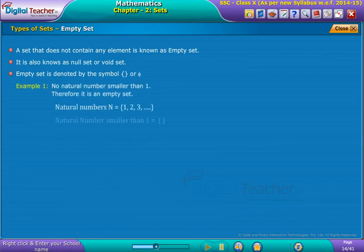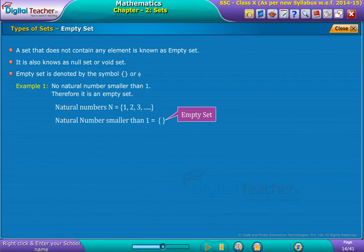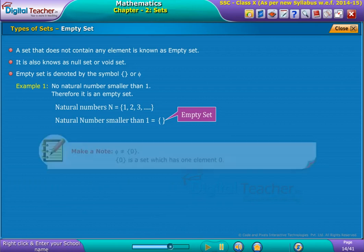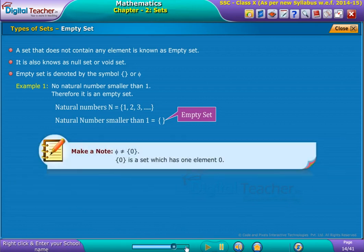Example: the set of natural numbers smaller than one. The above example is an empty set because there is no natural number smaller than one, so it is an empty set.